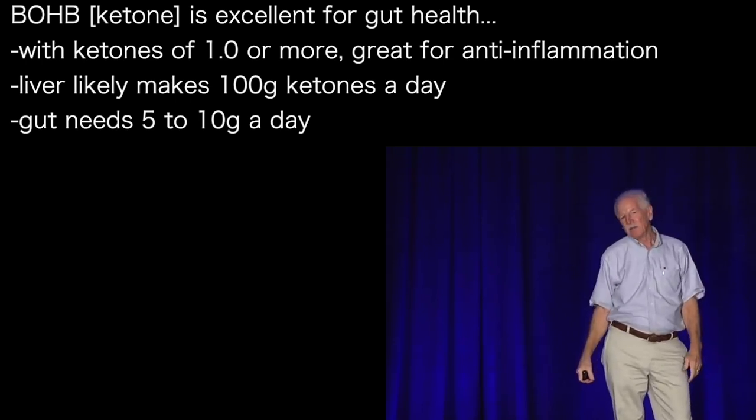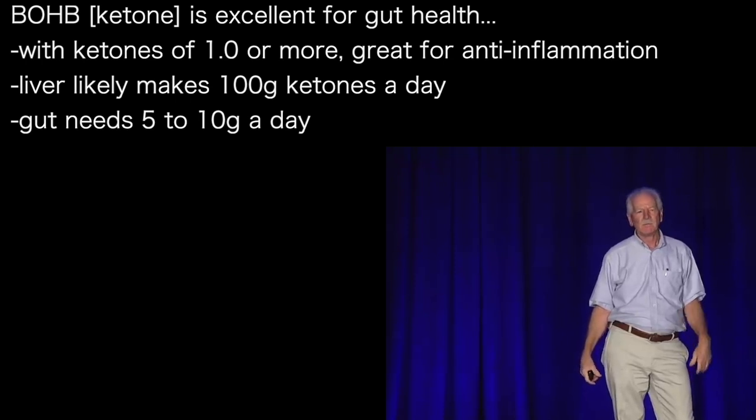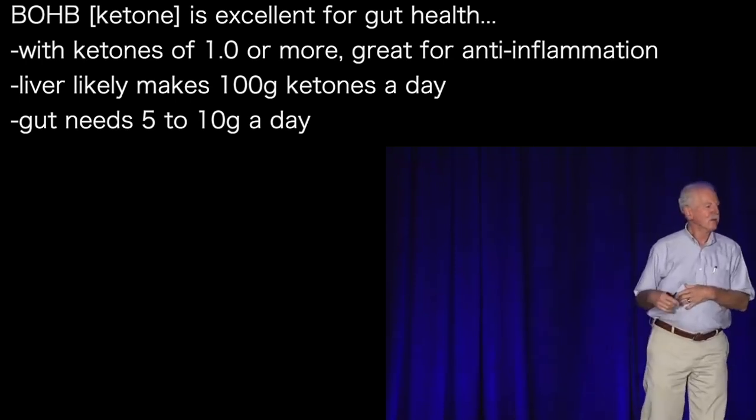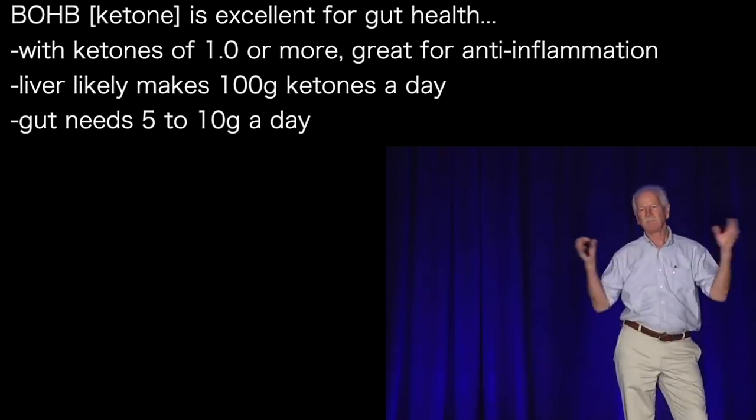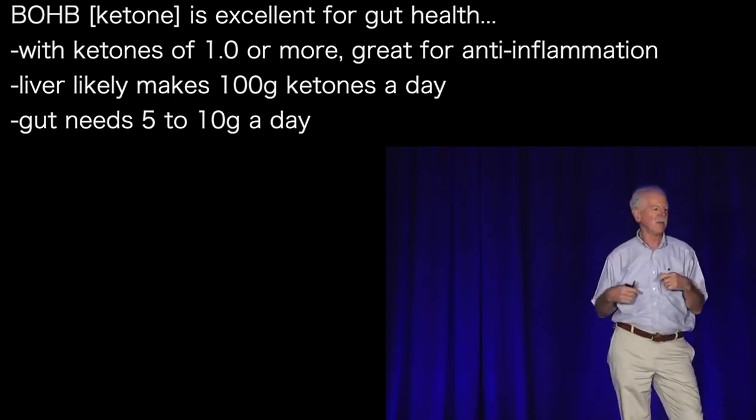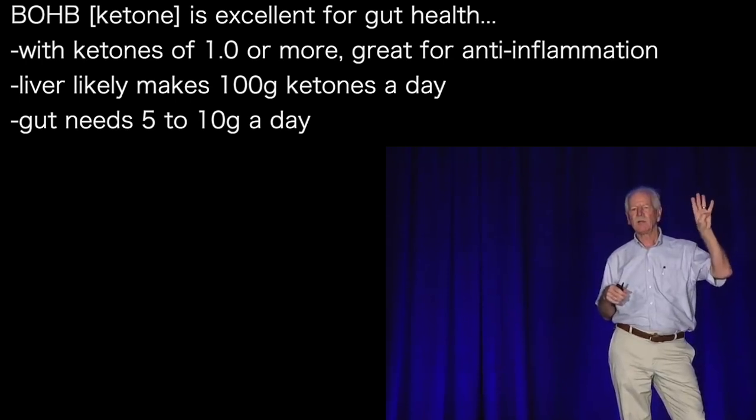So if you're worried about gut health on a pure carnivore diet, if you've got ketones of 1.0, don't worry. My liver makes probably 100 grams of beta-hydroxybutyrate a day. I'm guessing, but based on good science from other people, the gut probably needs 5 to 10 grams of either butyrate or beta-hydroxybutyrate a day.